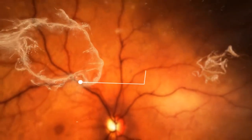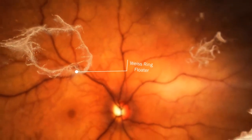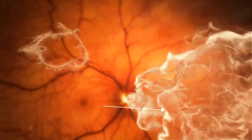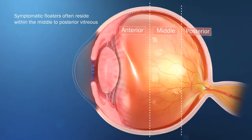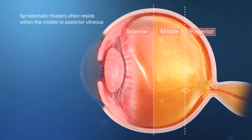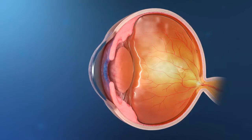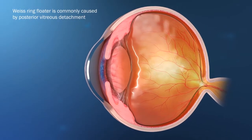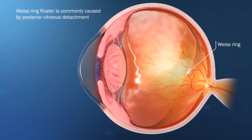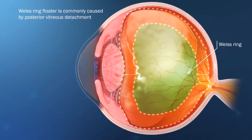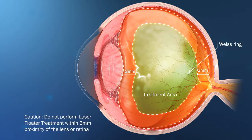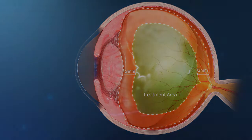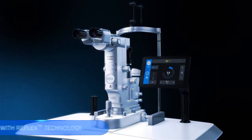These characteristics also determine whether a floater can be treated. Symptomatic floaters often reside in the middle to posterior vitreous. The Weiss ring floater, commonly caused by posterior vitreous detachment, is usually located a safe distance from the crystalline lens and the retina, and because of this it can often be effectively treated with laser floater treatment.